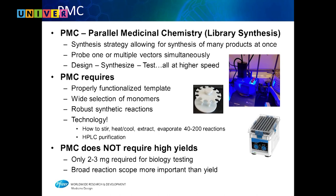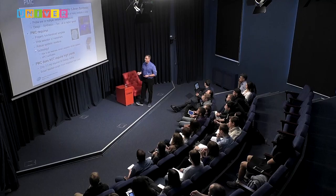Parallel medicinal chemistry is the synthesis of many products at once — you go multiple vectors at the same time at higher speed. We need a template, lots of monomers, and robust synthetic reactions — reactions tolerant of many different groups. You don't want to set up 100 reactions under nitrogen; you want reactions you can set up in air.